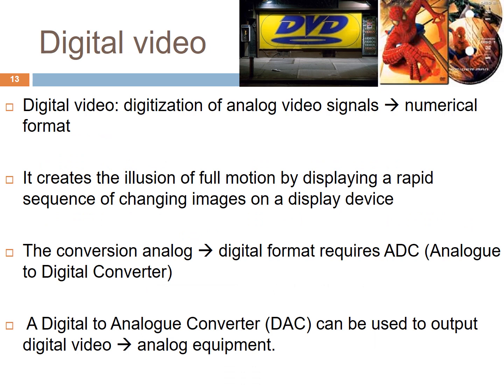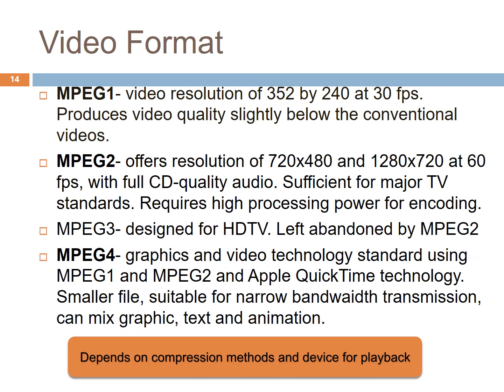Digital video is the digitization of analog video signals. It creates the illusion of motion by displaying a rapid sequence of changing images on a display device. For example, with a digital camera, once we capture or record a video, it requires an ADC — an analog to digital converter — to convert the analog signal to a digital signal to record the video, and then convert back to analog signal for playback. This video format can be in the form of MPEG video. There are many types of MPEG format which differ in terms of compression algorithm methods and the device for playback.